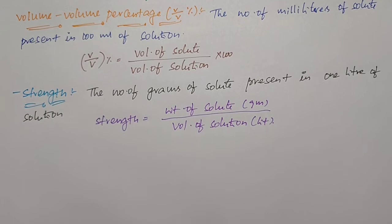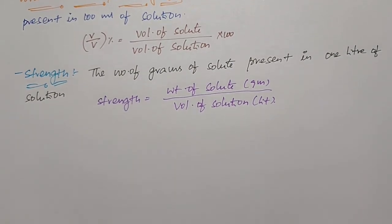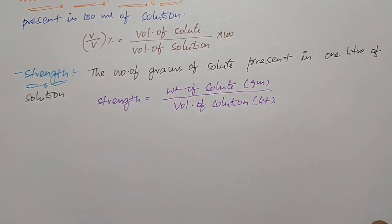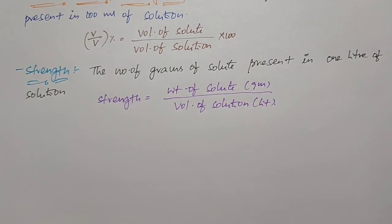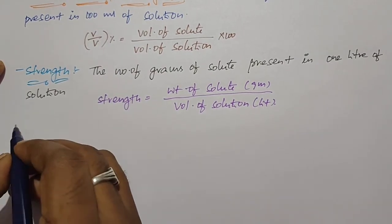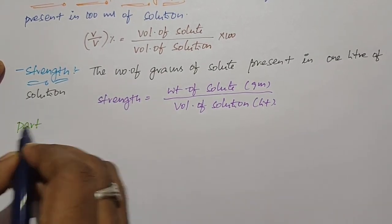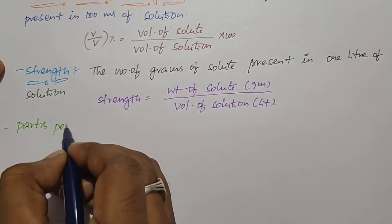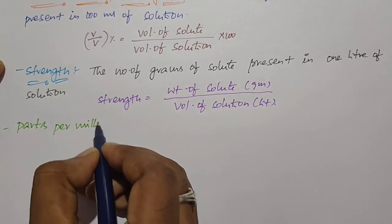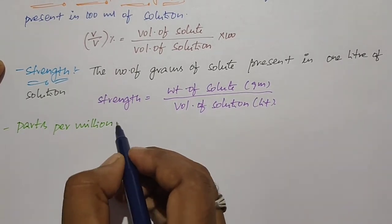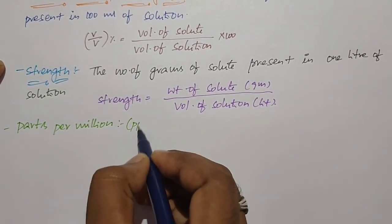This is about strength of the solution. Next is PPM — parts per million — or PPB, parts per billion. The next concentration term is parts per million, abbreviated as PPM.